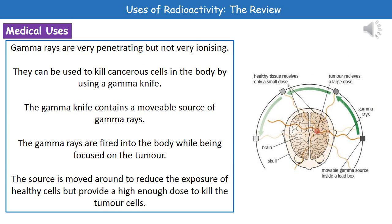When we think about gamma radiation, these are very penetrating but not very ionizing. One of the key uses for gamma radiation is in cancer treatments. We can use a device called a gamma knife to kill cancerous cells within the body. We've got a movable source of gamma radiation in the machine, focused on the location of the tumor at all times, but it moves. The reason for moving it is that we don't want the healthy cells surrounding the tumor to be killed as well. By moving the source around but keeping it focused on the tumor, the healthy cells get a lower dose, which shouldn't kill them, but the tumor gets a higher dose in order to kill it.